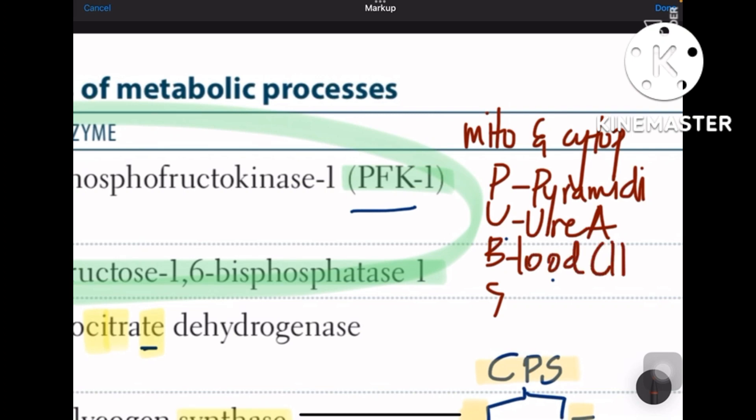Gluconeogenesis enzyme is fructose-1,6-bisphosphatase. So these are the cycles that occur in both cytoplasm and mitochondria. You need to remember that point.